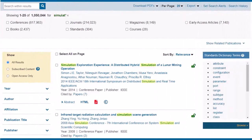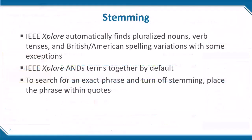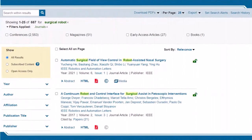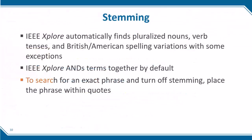You can use an asterisk wildcard to get all variations of a word. IEEE Xplore ANDs terms together by default, so if you enter two or more terms, it automatically looks for both of those terms, but not necessarily as a phrase. For example, if I search for the terms "surgical robot," the search engine will find any instances where both terms are present, but not necessarily as a phrase or in that order. To search for an exact phrase, place the phrase within quotes.